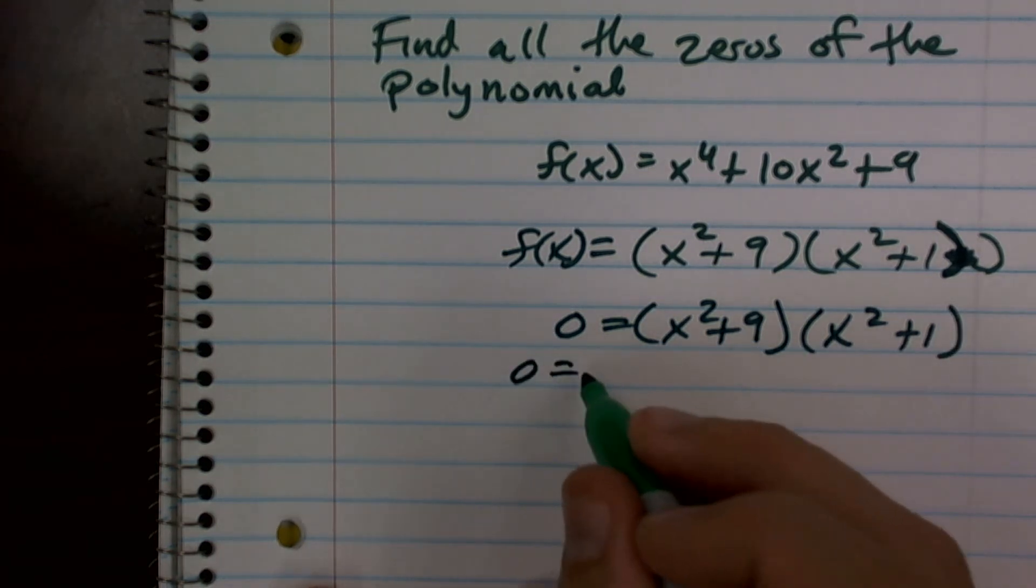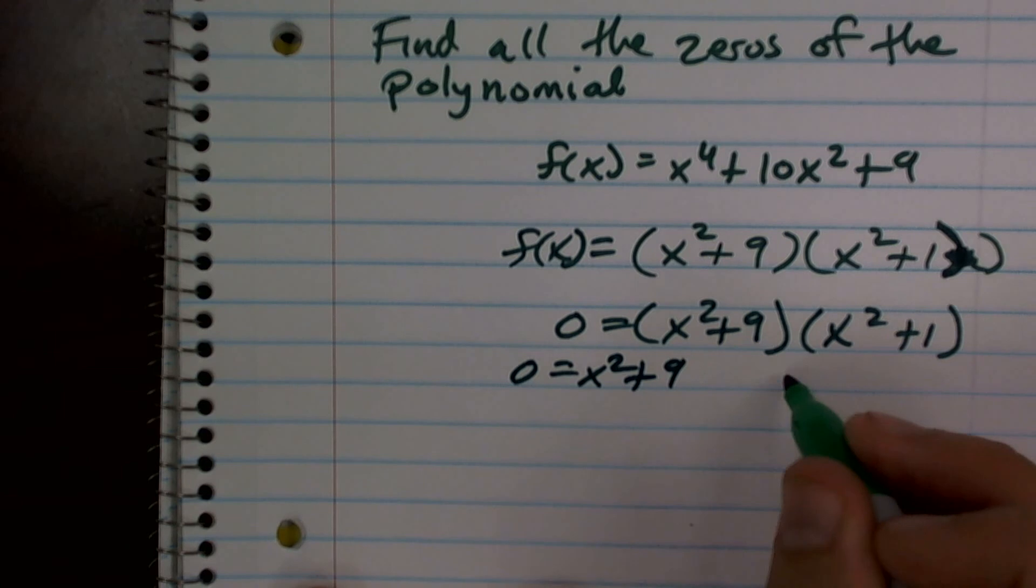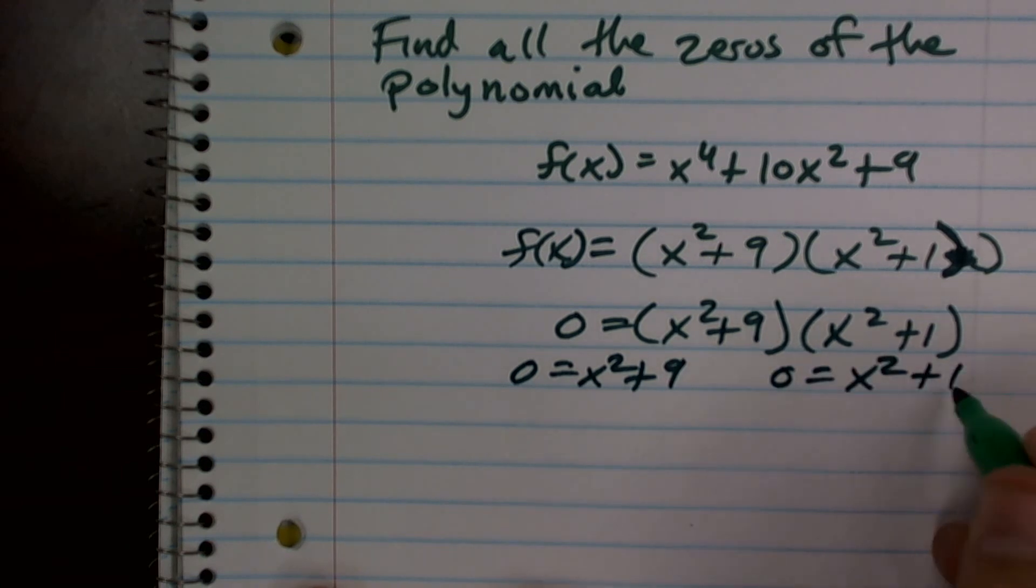Using the zero product property, zero equals x squared plus nine, and zero equals x squared plus one.